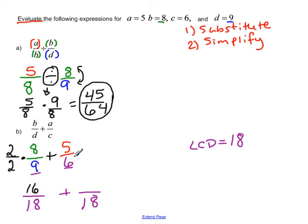And then for the other one, 5 sixths, when we build that 6 to an 18 denominator, we say, well, 6 times 3 gives me 18. So the numerator has to be multiplied by 3 as well to give me 15.